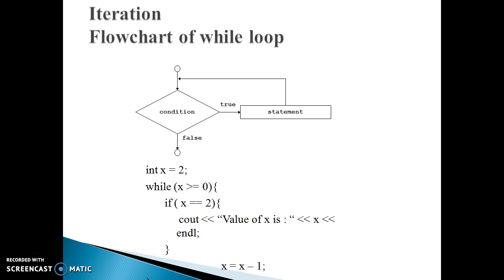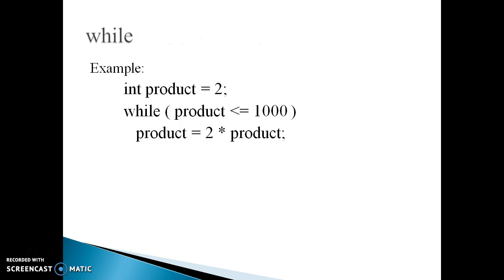In this example, int x is equal to 2. While x is greater than or equal to 2, it checks x equals 2, then it prints, and again goes for the next iteration where x equals 3, checks again, and likewise the code is repeated. This is the example of the while loop: while product is less than or equal to 1000, this loop is repeated until the value of product equals 1000.